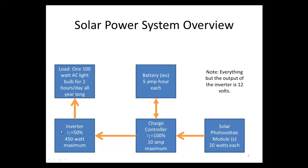Then we have an inverter. What an inverter does is take DC electricity and convert it to AC electricity, and it loses some electricity along the way. We're going to assume that our efficiency is 50%. Efficiency is labeled with the Greek letter eta — so whenever you see eta, think efficiency. Our inverter has a maximum power rating of 450 watts, so we'll have to take that into account.